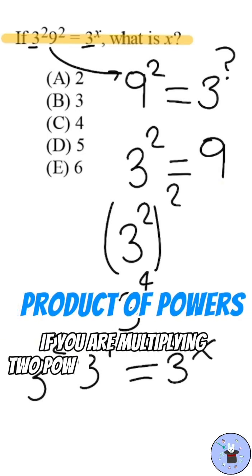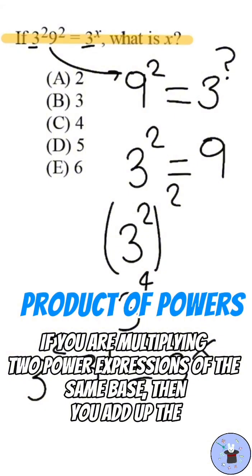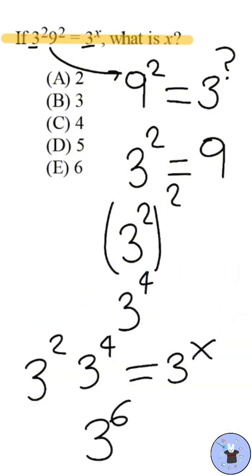If you are multiplying two power expressions of the same base, then you add up the exponents and keep the base. We can add up 2 and 4 to get 6.